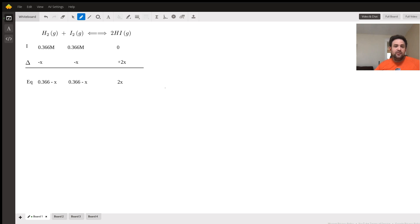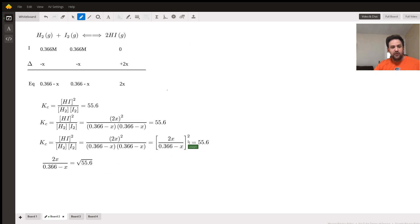Let's go ahead to the next board. Here I've just drawn out the math for us. Our equilibrium expression looks like Kc is equal to hydroiodic acid squared divided by the concentrations of H₂ and I₂, which is equal to 55.6, which was given to us in the problem.